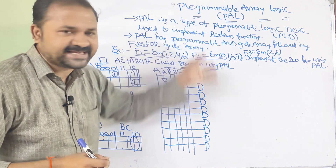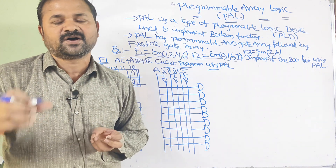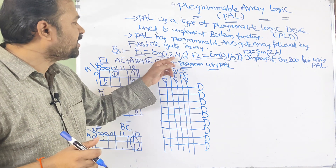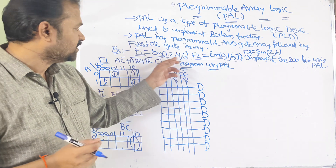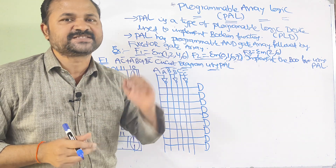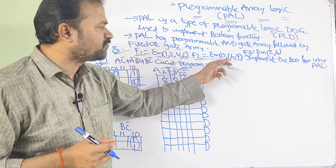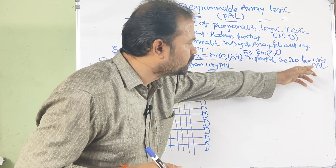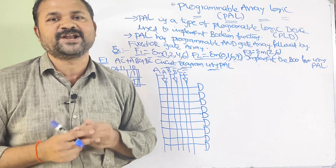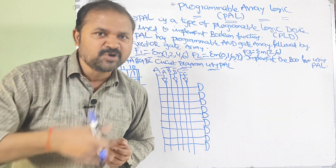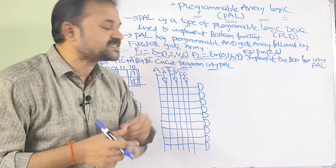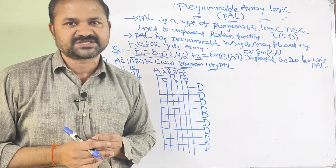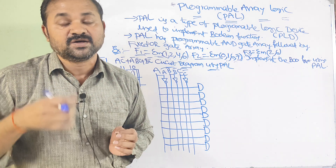Now let us take an example, as examination questions will mainly be given on examples. F1 is equal to sigma m of 1, 2, 4, 6 — where m means minterm, so that means sum of products. F2 equals sigma m of 0, 1, 6, 7. F3 equals sigma m of 2, 6. We need to implement these boolean functions using PAL, programmable array logic. In the examination, a truth table, boolean functions, or directly a boolean expression may be given.